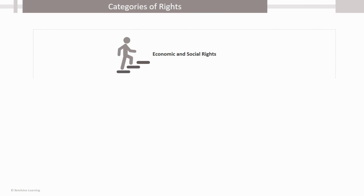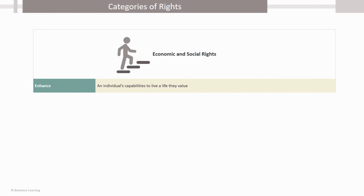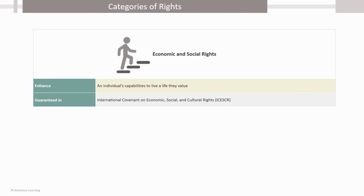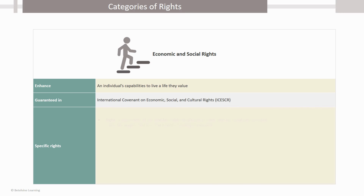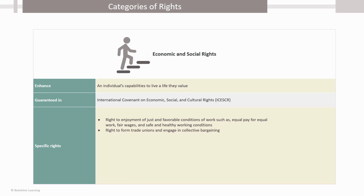Economic and Social Rights refer to those rights that enhance the capabilities of human beings to live a life with human dignity or a life that they value. These rights are guaranteed in the International Covenant on Economic, Social and Cultural Rights and include: the right to enjoyment of just and favorable conditions of work such as equal pay for equal work, fair wages and safe and healthy working conditions, and right to form trade unions and engage in collective bargaining.